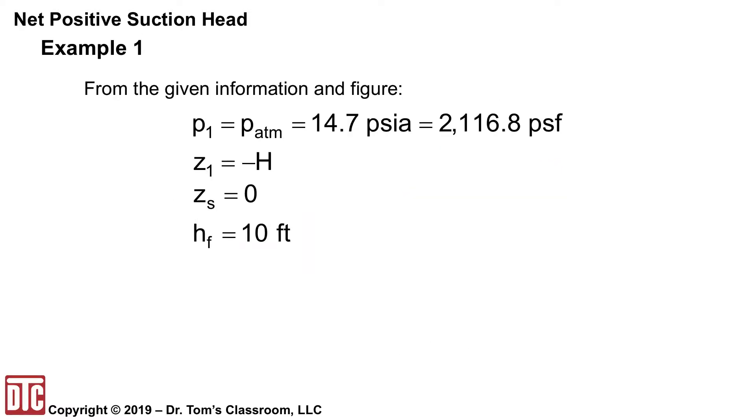And then from our given information, we've got P1 equals P atmosphere 14.7 or converted 2116.8 PSF. Our Z1 as I said is minus H because we made the datum at the suction side. Suction side then is zero. The HF is 10 feet.